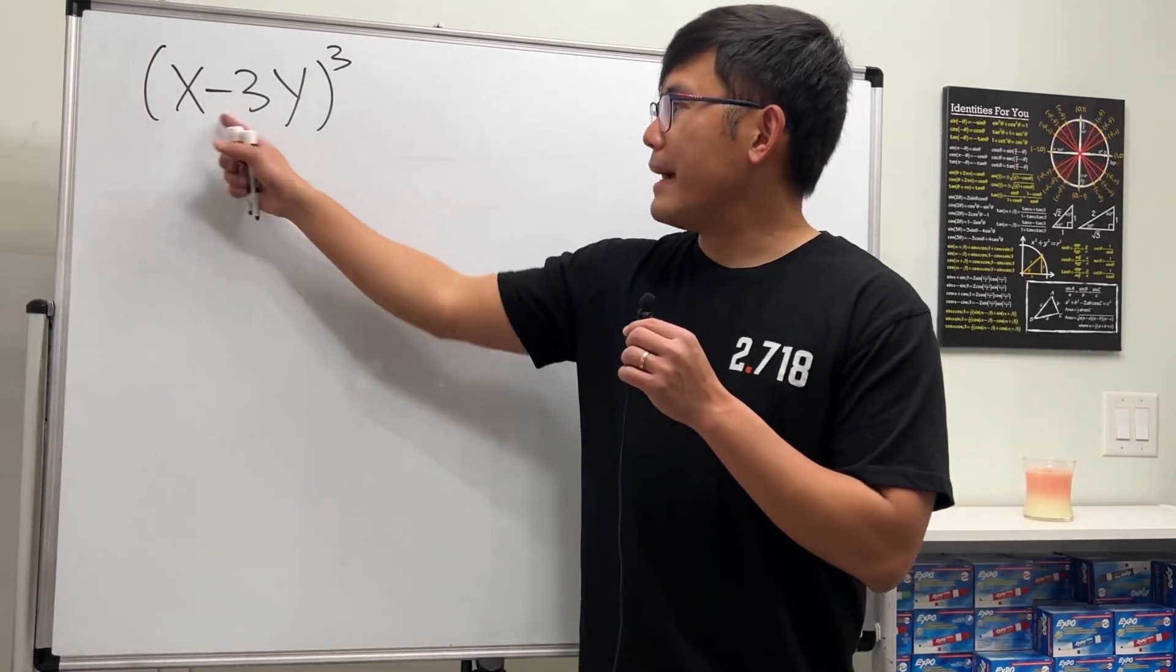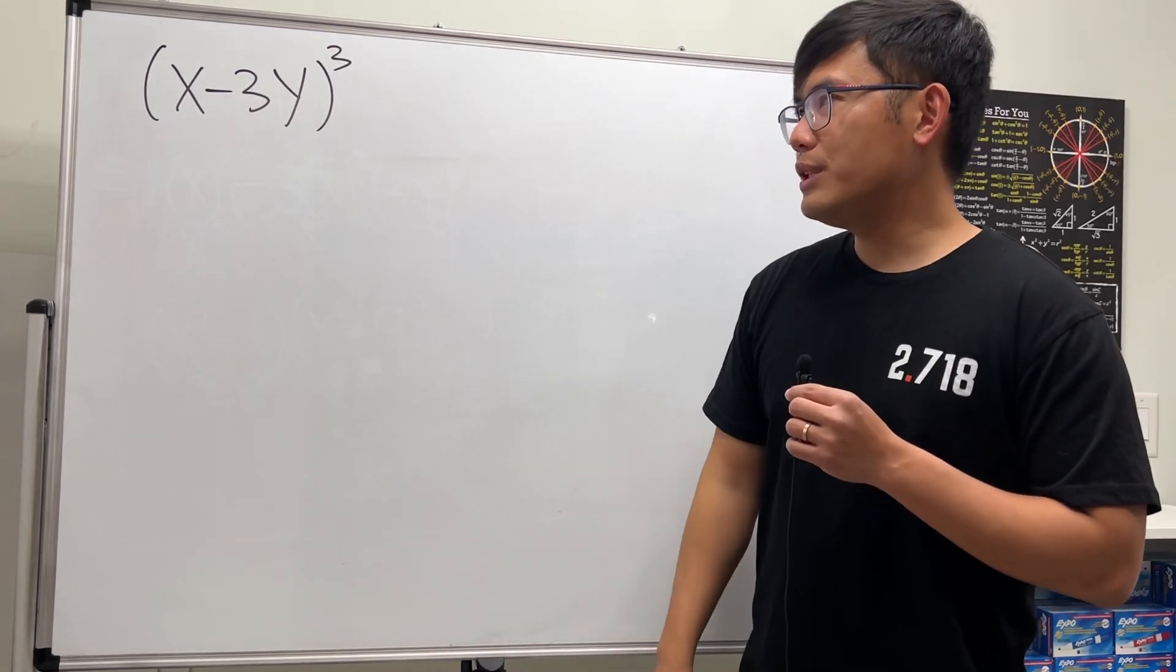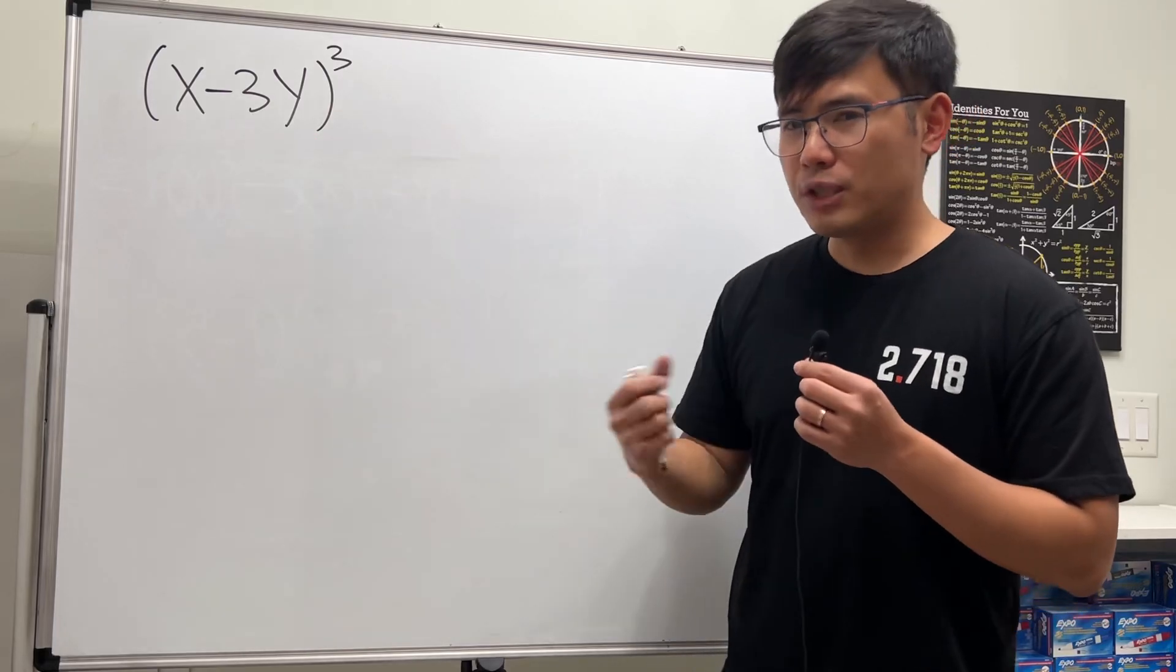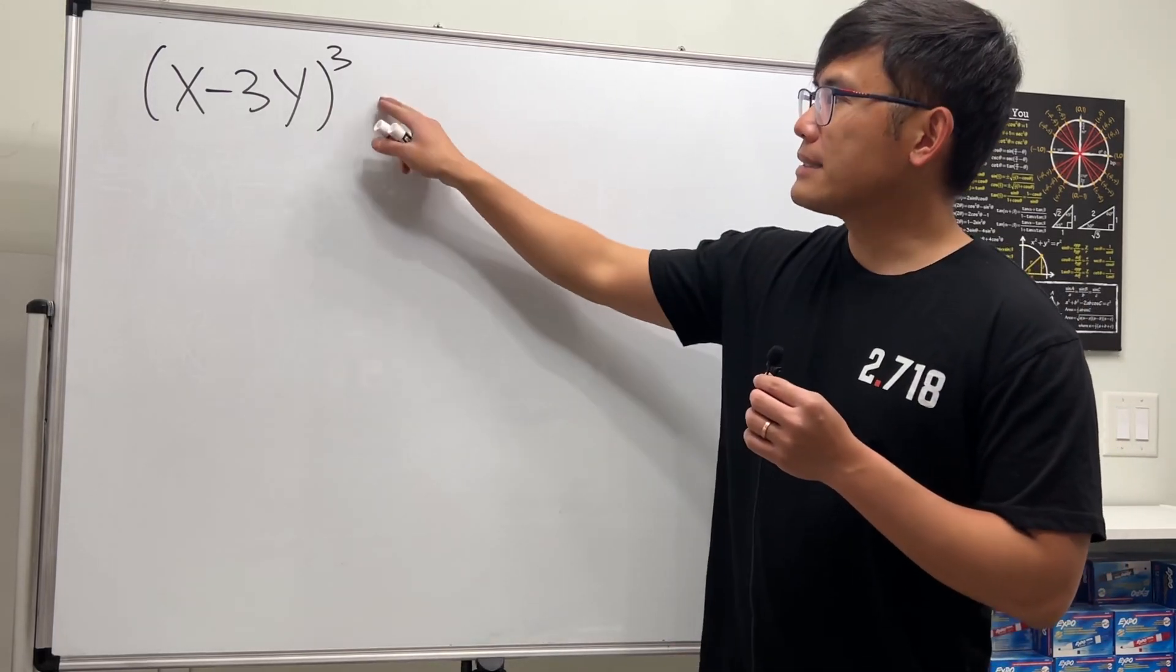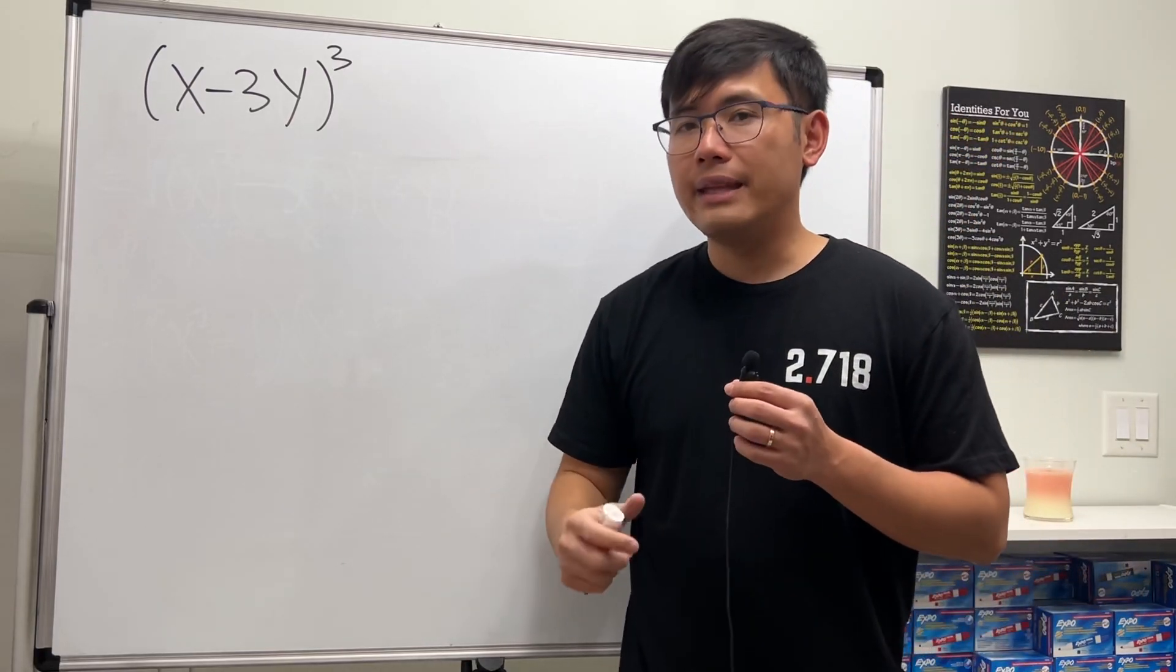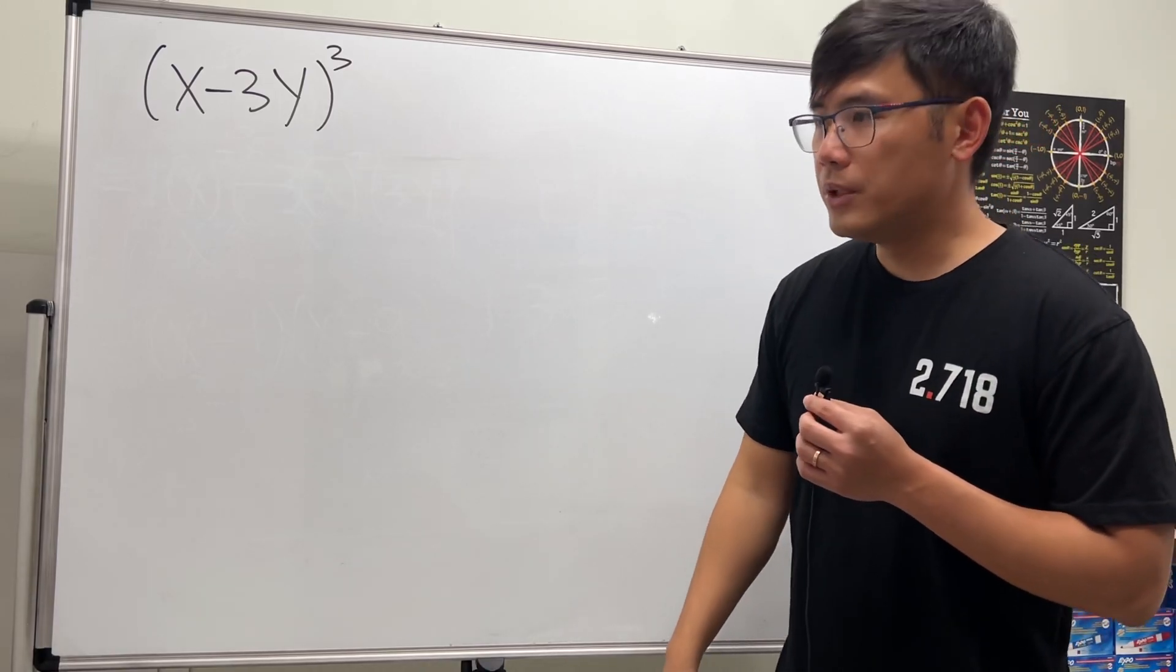Let's see how we are going to expand a binomial to a third power. Because this is to the third power, I don't really want to write this down three times and then multiply them out the traditional way. Let's actually use Pascal's triangle to figure out the coefficients, and then I'll show you guys how to construct the answer. In fact, that's called the binomial theorem.